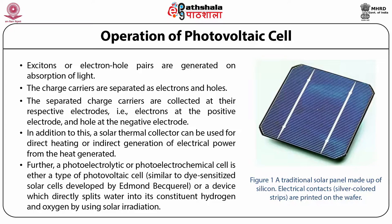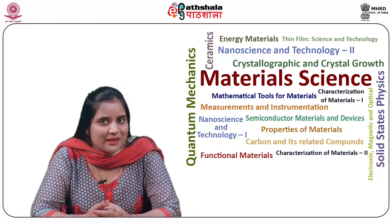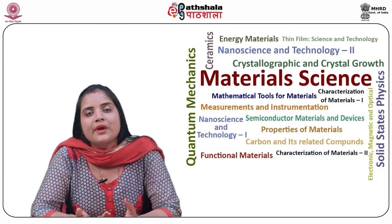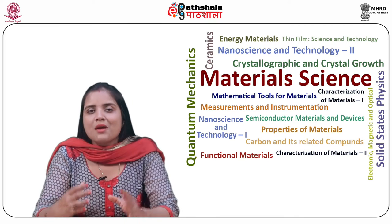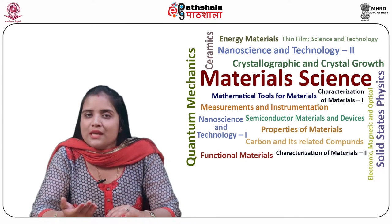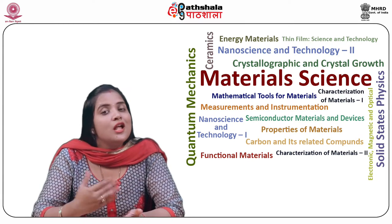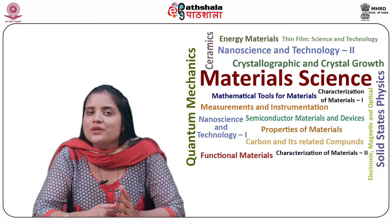Figure 1 shows a traditional solar panel which is made up of silicon. Electrical contacts, that is silver colored strips, are printed on the wafer itself. The working of a solar cell can be summarized as shown in the figure. Photons present in sunlight hitting the solar panel are absorbed by the material of the panel, for example silicon.